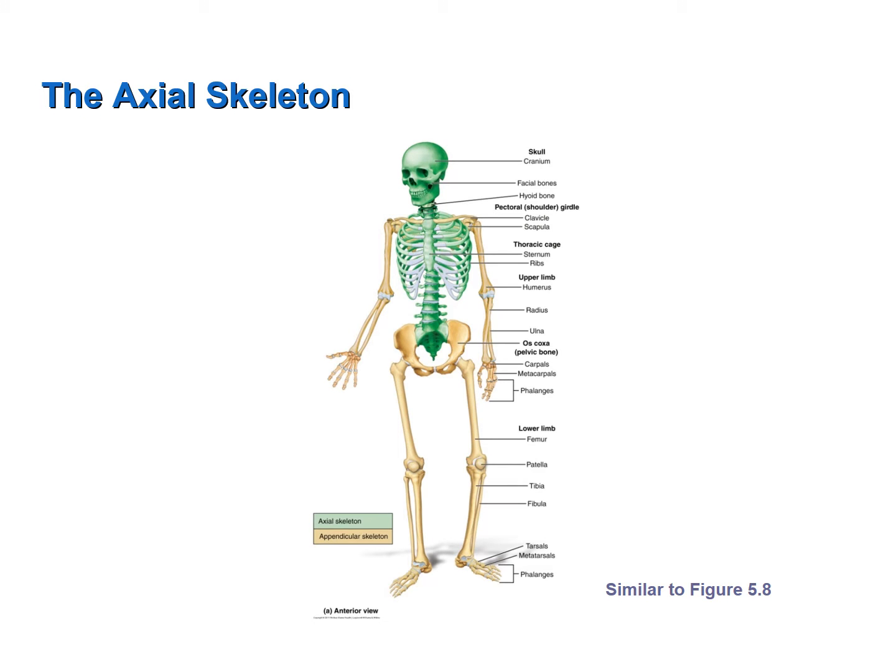You learned the anatomy of the axial skeleton in lab and we are not going to rehash that information. However, there are a few topics that I believe are important that I would like to discuss. The axial skeleton includes the bones of the long axis of the body, shown in green in this figure from your book. They include the bones of the skull, the bones of the vertebral column, as well as the bony thorax, which includes the breastbone or sternum, the ribs, and the thoracic vertebrae that articulate with the ribs.